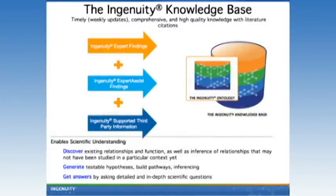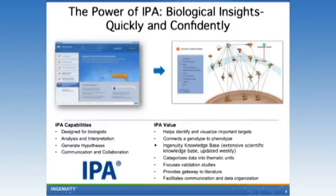A lot of people ask about the Ingenuity Knowledge Base — where does the science come from? The Ingenuity Knowledge Base is timely; it's updated weekly. We have big releases where we make huge updates to content, and we may add new features such as filters or certain tools. Coming December 17th, we are adding three things to IPA: a transcription factor tool, a downstream effects tool, and human isoform view. It's very rigorous — up-to-date, high quality, based on manually curated literature citations as well as third-party information.